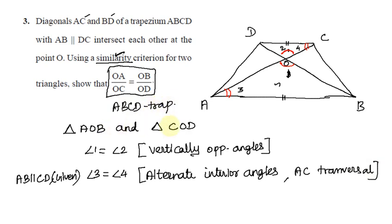We have shown two pairs of equal angles. Therefore, by the AA similarity criterion, the two triangles are similar triangles.